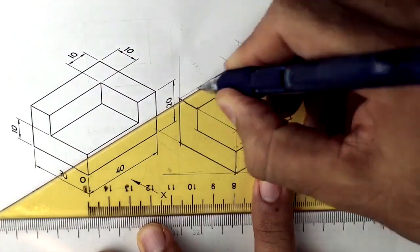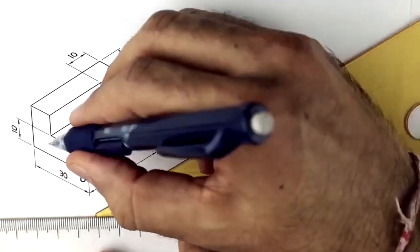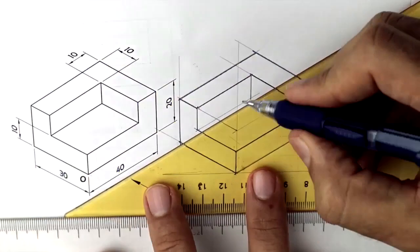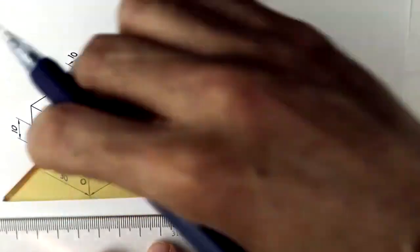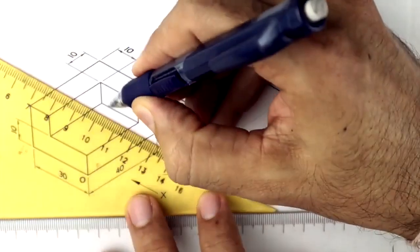Then we'll draw this portion which is down, see this. So you just need to extend and you need to move your set square.